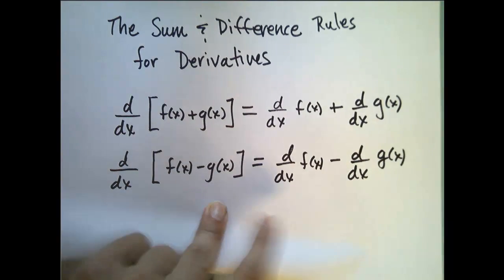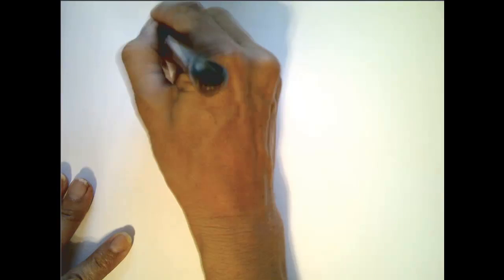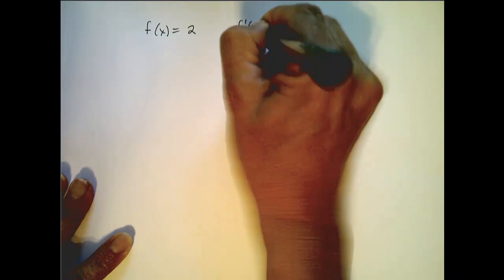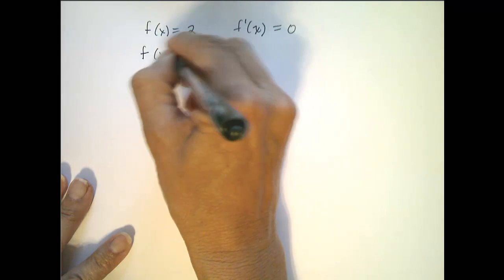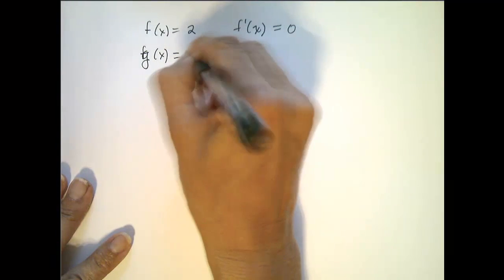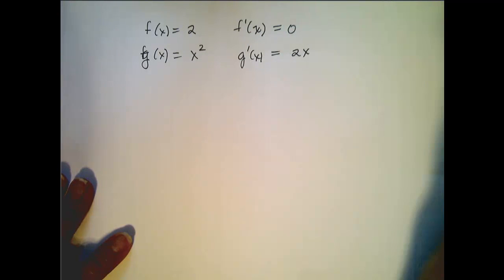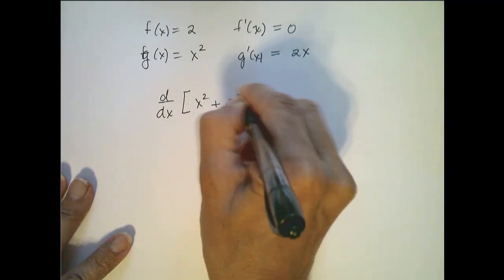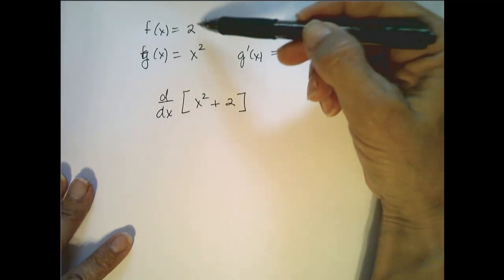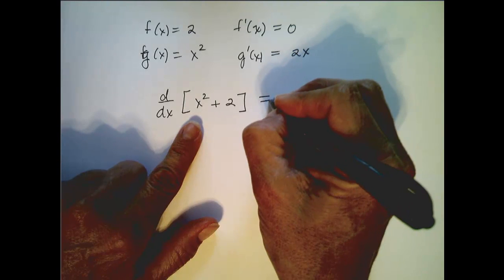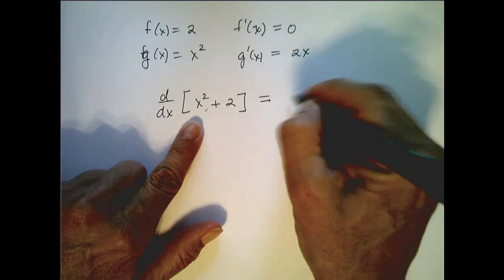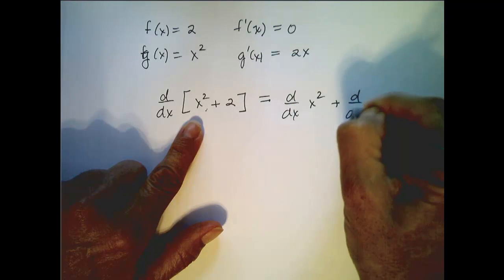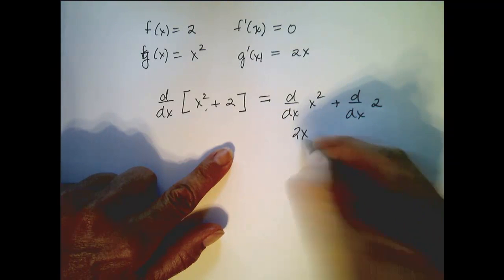Now let's look at some examples and see why that is useful to us. We know from previous videos that if f of x equals two, then the derivative of f is equal to zero, because the derivative of a constant function is zero. If g of x equals x squared, then we know the derivative of g is 2x — that's our power rule. So if I want to take the derivative of x squared plus two, the sum rule tells me I can take the derivative of each term: the derivative of x squared plus the derivative of two, which gives 2x plus zero.